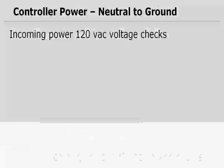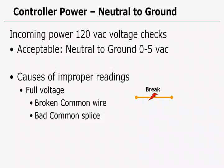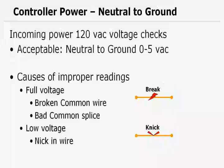Let's drill into that a little bit more. 0 to 5 volts is an acceptable reading. The causes of an improper reading: if we had a full voltage reading, something around 120 volts, we might have a broken common wire. The common wire, the neutral wire, could be broken. We could be somehow pulling voltage from the 120 volt hot wire. A break is going to do that if it's broken in the right way. And a bad common, causes of improper readings, or for a full voltage reading, we might have a broken common wire where it's inducing voltage into the hot wire, or we might have a bad common wire splice. If we have a low voltage reading, it could be a nick in the wire, or it could be a bad splice. So those are the things that we're looking for if, when we read the neutral to ground, we have something more than 5 volts.